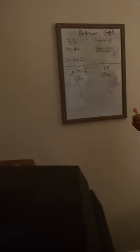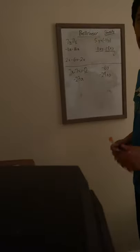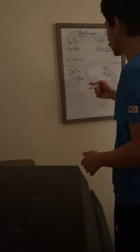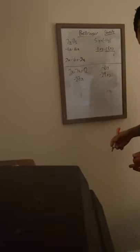For the last problem, we have 2x minus 6x minus 2x. We're going to combine like terms. We have 2x minus 2x, which gives you 0 because 2 minus 2 is 0 — those basically zero out. So we're just left with negative 6x for our answer.